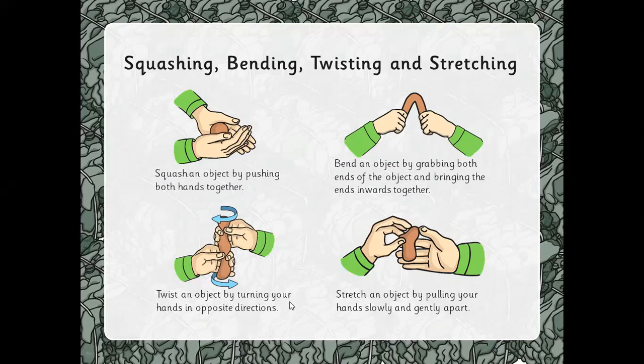We may be able to twist an object by turning our hands in opposite directions, one hand clockwise and one hand anticlockwise. And we might be able to stretch an object by pulling our hands slowly and gently apart.